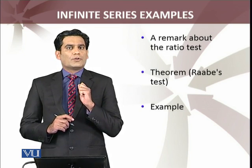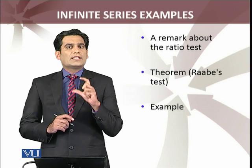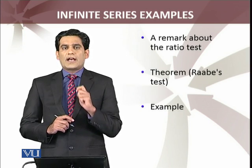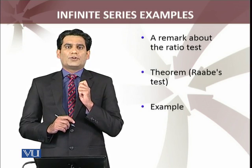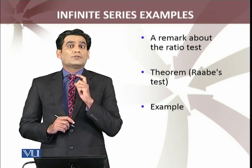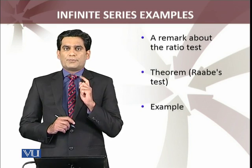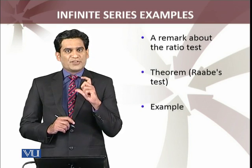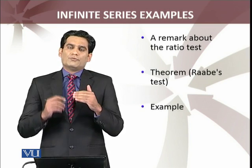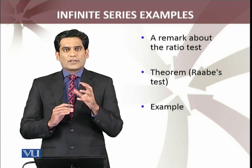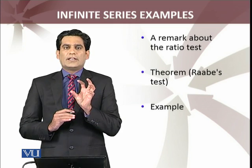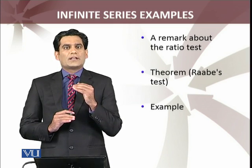If the terms of the sequence are less than 1, we cannot conclude that the limit as n approaches infinity of a_{n+1} over a_n is less than 1. That is the important remark which I will discuss in detail. Then we want to have a generalized result which can cover this ambiguity.